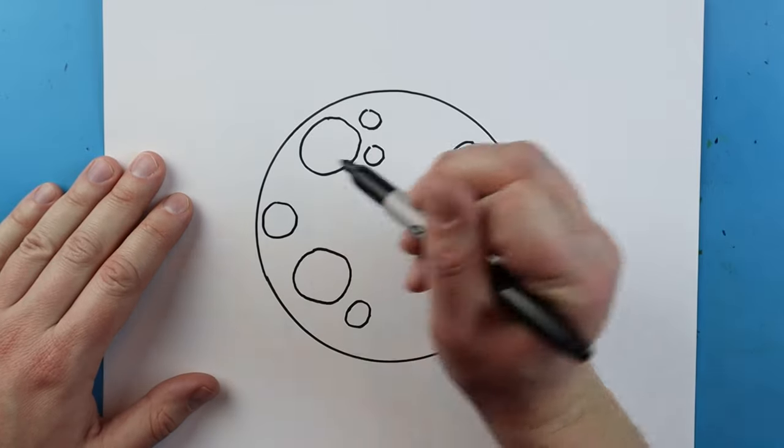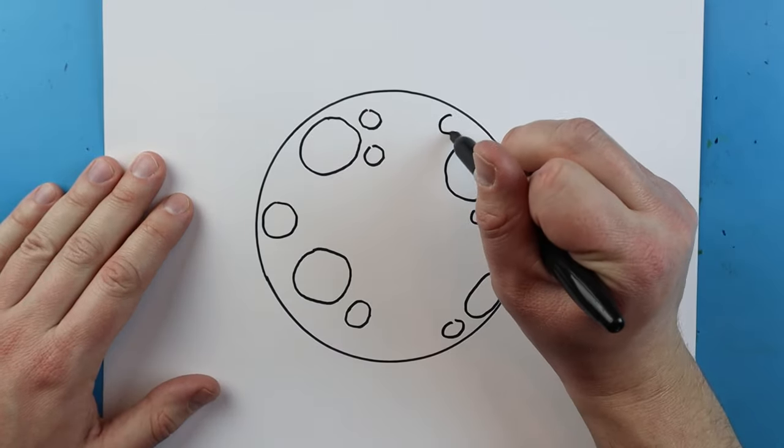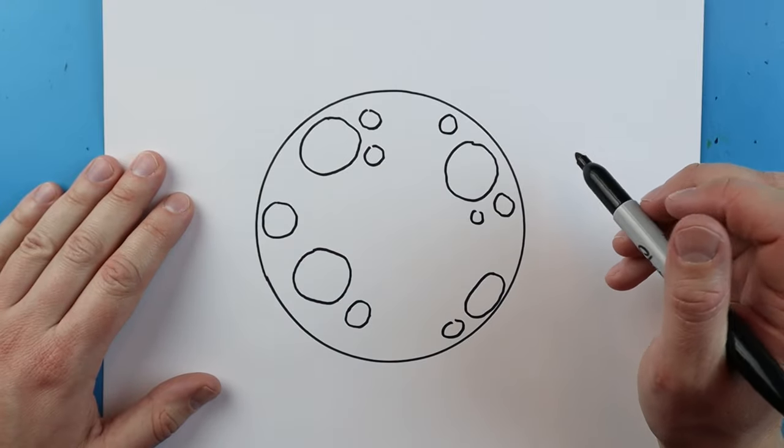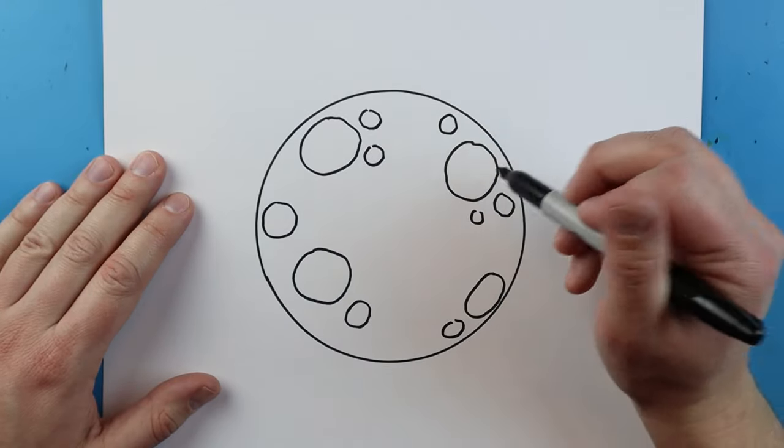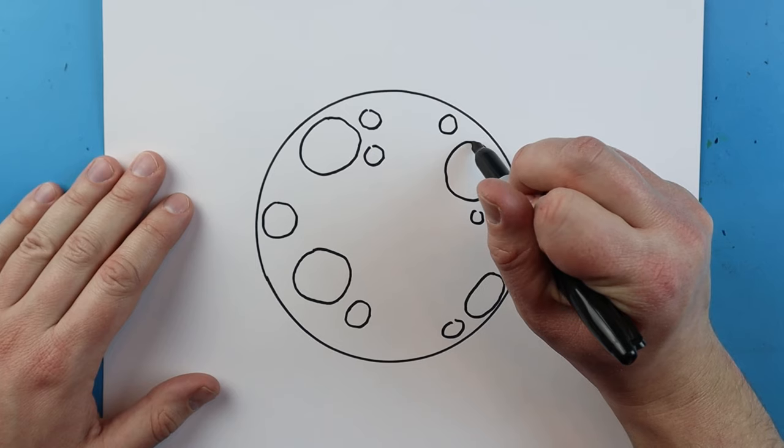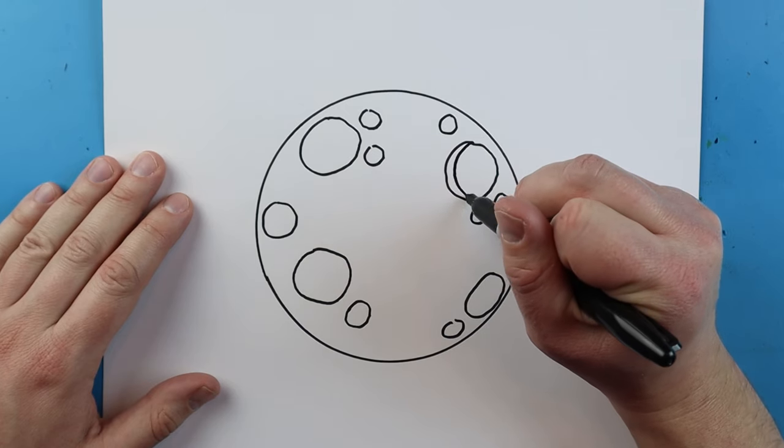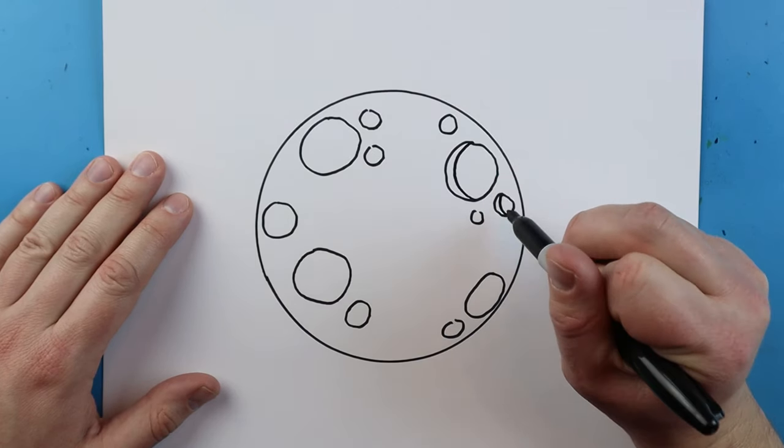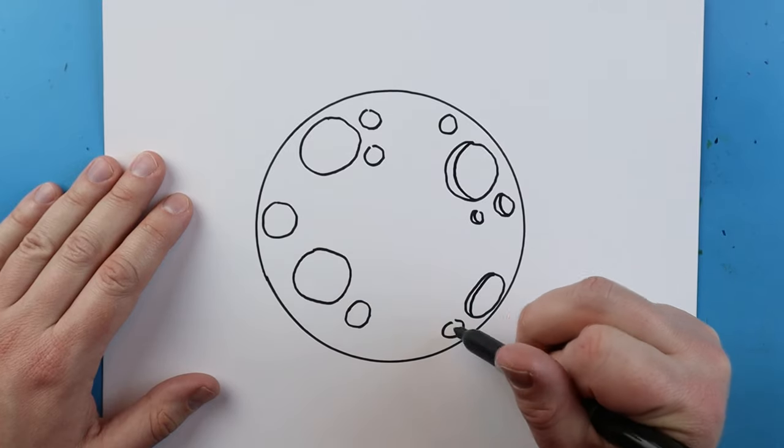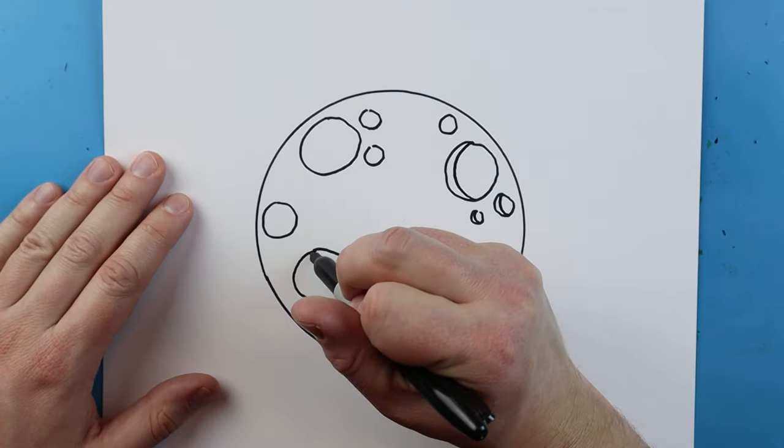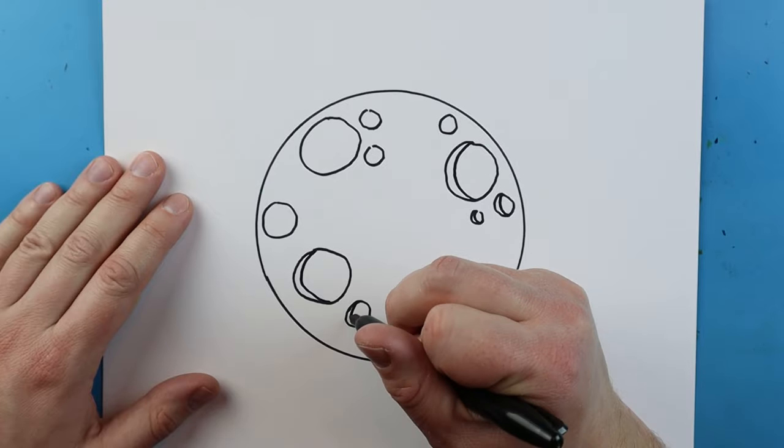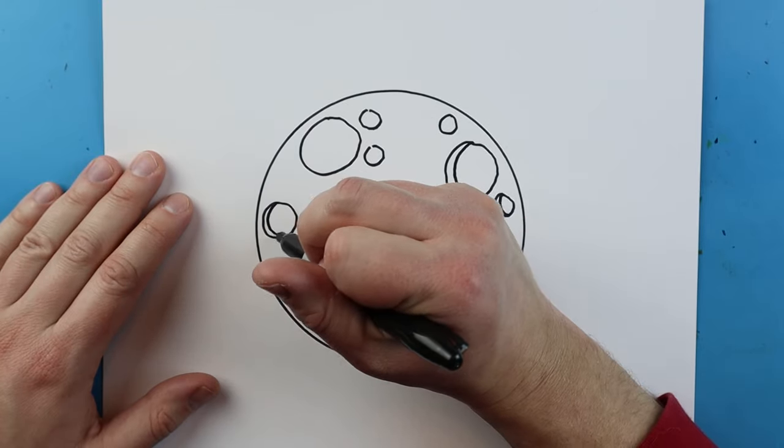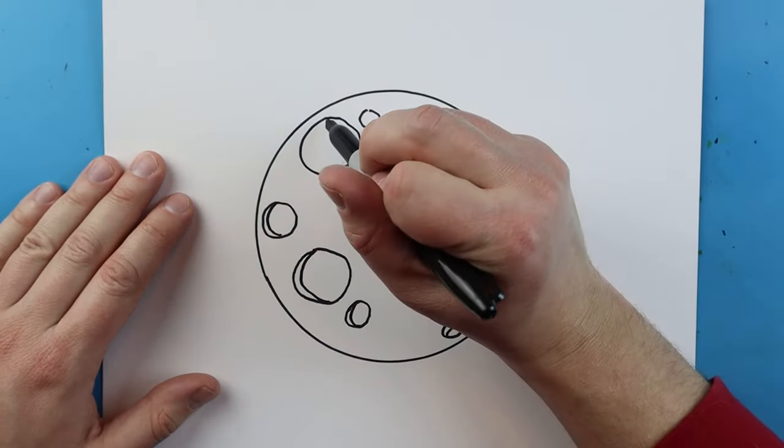Now inside of here, each one of these circles, I'm going to add a curved line and this is just going to make it look like it's got some craters and different things in here. Gives it a little bit of texture and some detail, so you just want to go ahead and add that inside each one of these.